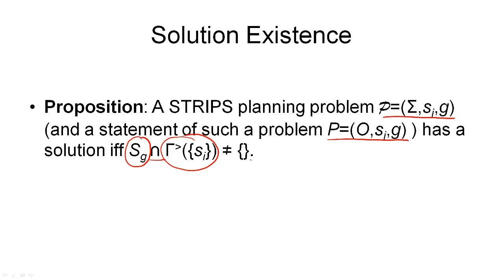Or, you can see it the other way around too. If this set actually contains an element, let's say a state SG, then this state is in both these sets. Which means it is a goal state, and it is reachable from the initial state. And if there's a reachable state from the initial state that is a goal state, that means we have a solution to our planning problem.